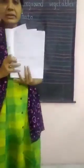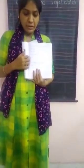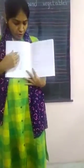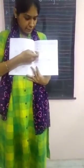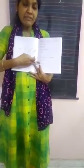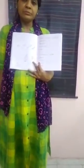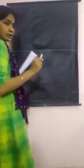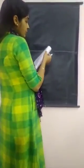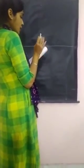Now children, we have written the spellings of above ground and underground vegetables. Now you have to draw a line in the middle to separate the above and underground vegetables. First, we will make pictures of tomato, brinjal, ladyfinger, and peas.